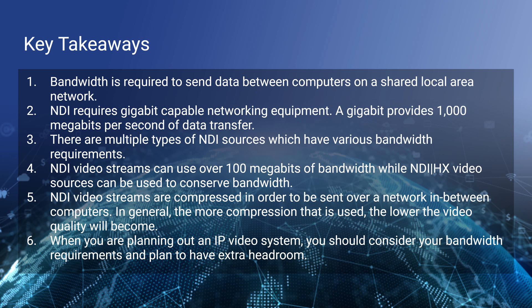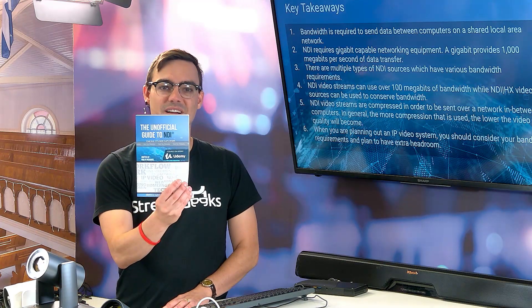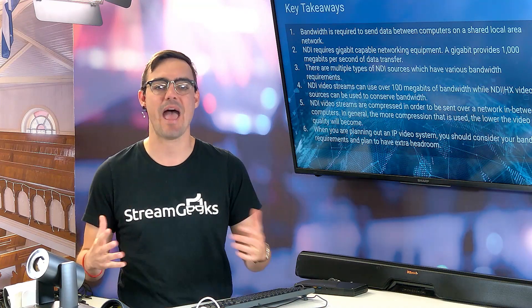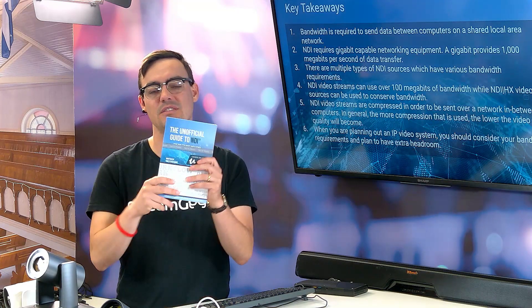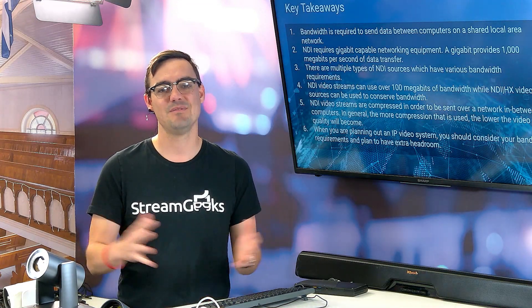An NDI video stream can many times be way over 100 megabits per second, but NDI HX could bring that down to almost 10% of the size. NDI video streams are compressed — remember that SDI is uncompressed; in order to bring video to a local area network, video must be compressed, and the more compression added, the lower the video quality becomes. NDI provides many different tools, and whether using NDI or NDI HX, it is designed to be high quality, low latency video for demanding video productions. When planning an IP video system, you really need to consider the bandwidth available for your project.